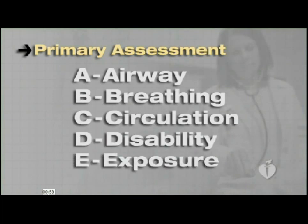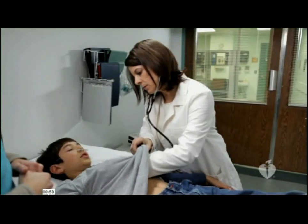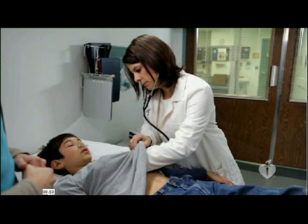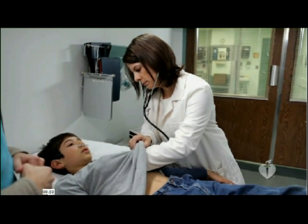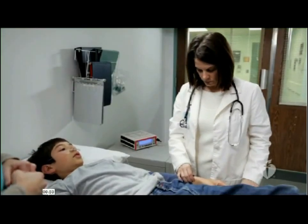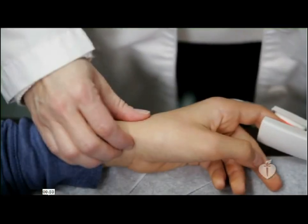The primary assessment is a hands-on evaluation where you assess respiratory, cardiac, and neurologic function to identify the problem. This assessment includes evaluation of vital signs and oxygen saturation by pulse oximetry. Following the primary assessment, you should identify the child's condition, decide what interventions — if any — need to be started, and implement these as appropriate.